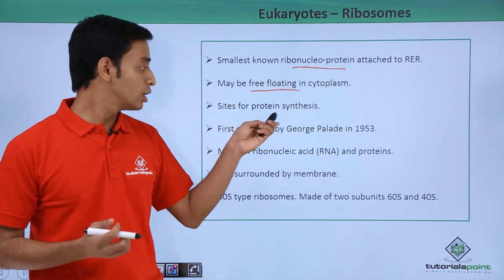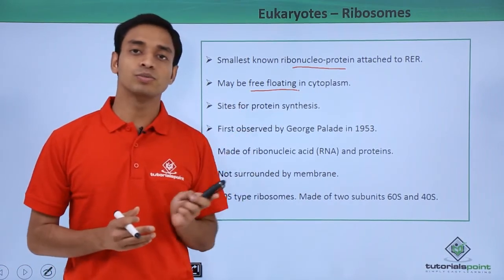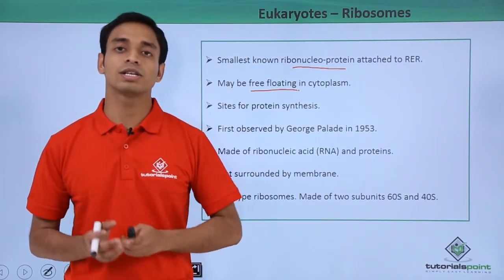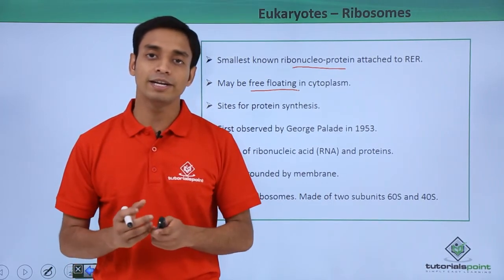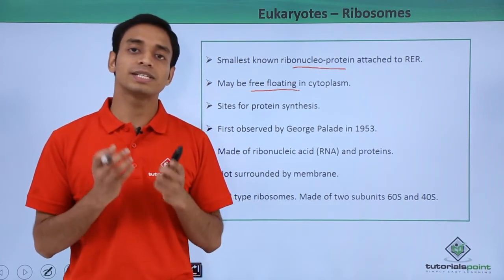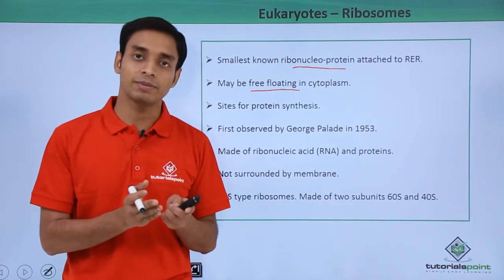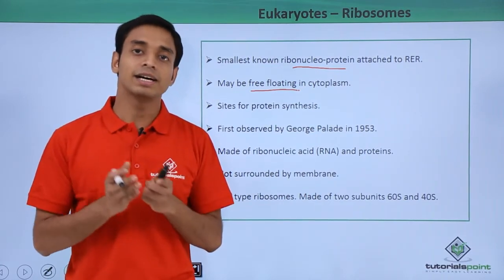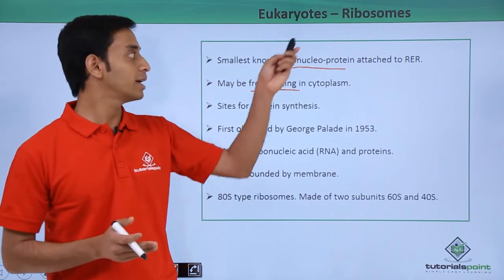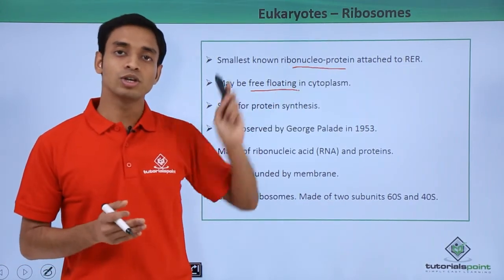These ribosomes actually help in the translation process — the translation of mRNA into proteins. The genetic information present in the form of DNA is first transcribed to form mRNA, and this mRNA is then translated by the ribosomes to form proteins.